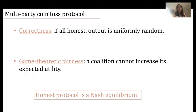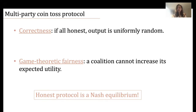For multi-party coin toss, the game theoretic fairness notion we consider is slightly different — we care more about the behavior of a coalition rather than a single strategic player. Game theoretic fairness requires that a coalition cannot increase its expected utility by deviating from the protocol. So, if a coin toss protocol is game theoretically fair against a coalition of size T, then the honest protocol is a T-sized coalition-resistant Nash equilibrium, because the best strategy for the coalition is to follow the protocol honestly.